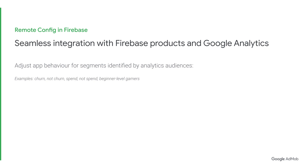Remote Config is easy to set up. Simply wire up variables in your app to use Remote Config parameter values and proceed to make a fetch call to receive those values in your app. Remote Config seamlessly integrates with other Firebase products and Google Analytics. This means that you can adjust app behavior for segments identified by your analytics audiences, like purchasers, your beginner-level gamers, or Firebase Predictions user segments like users predicted to churn or predicted to spend.